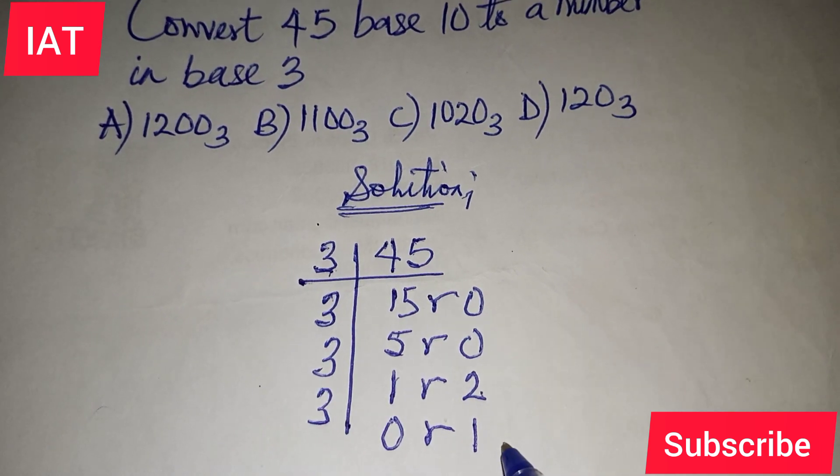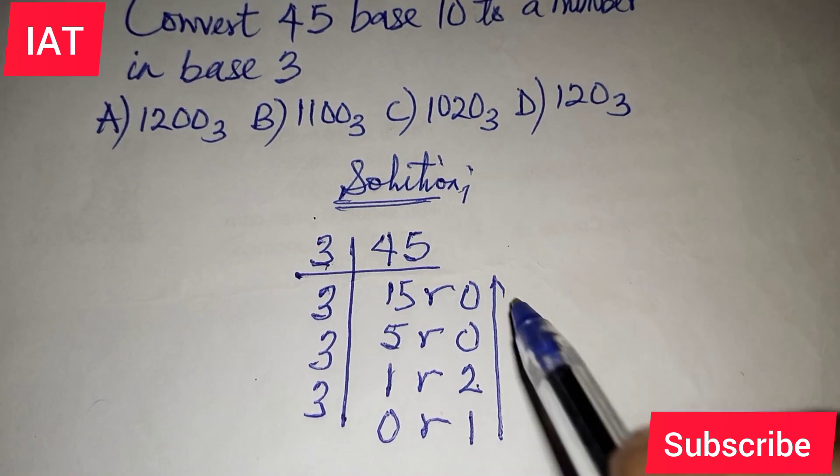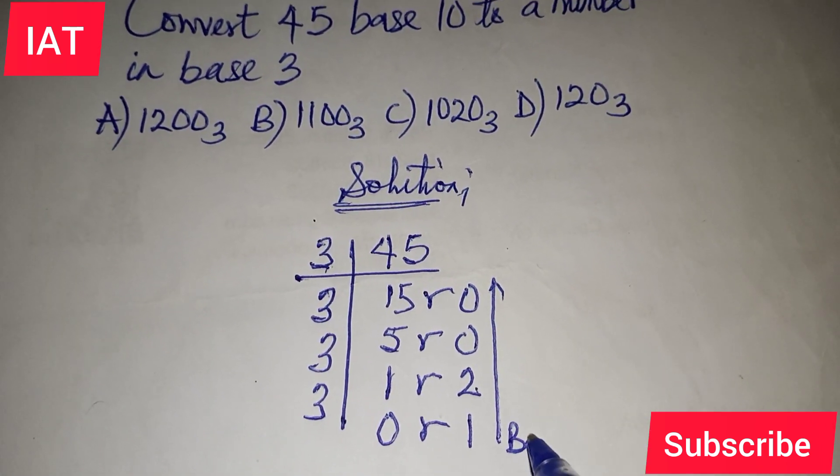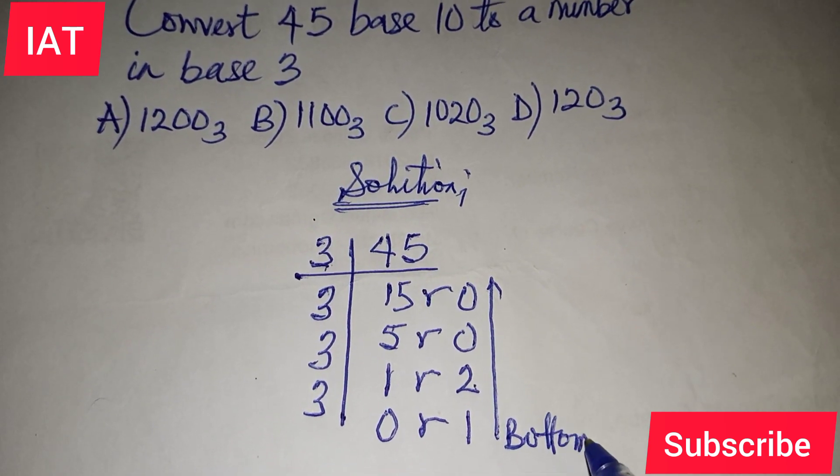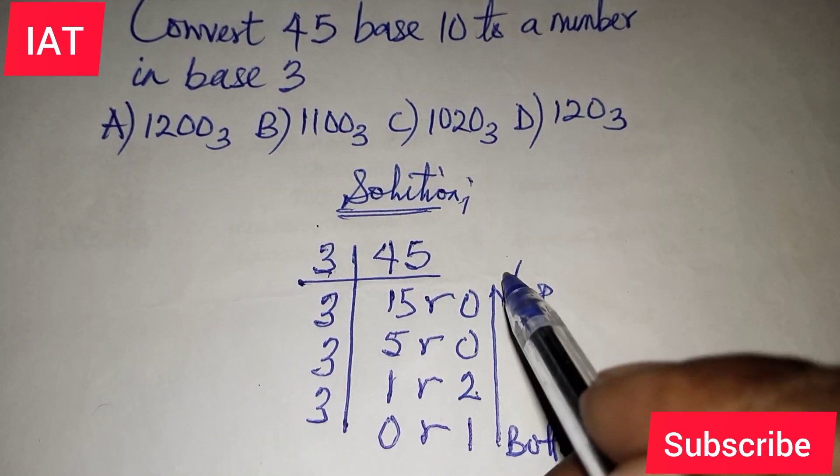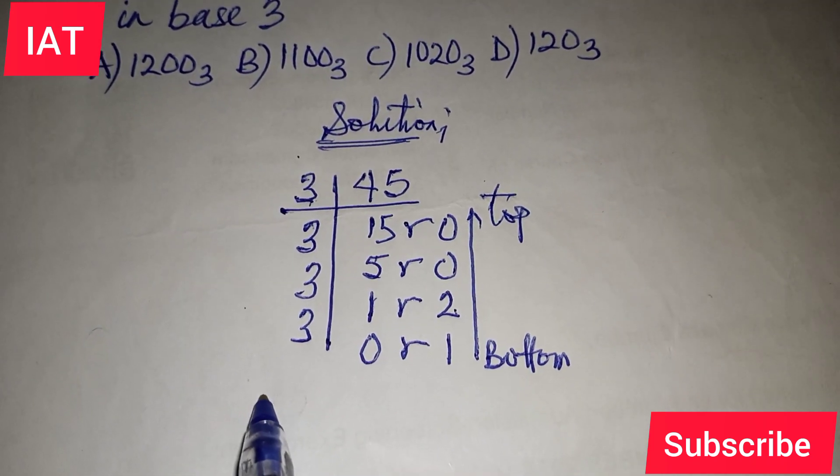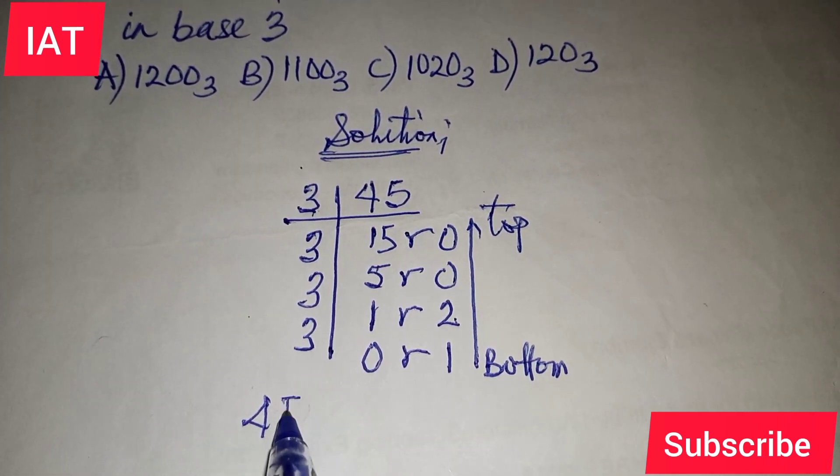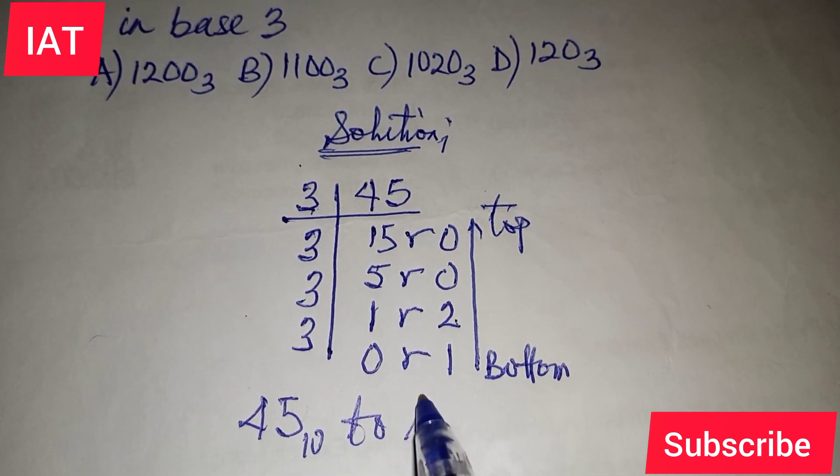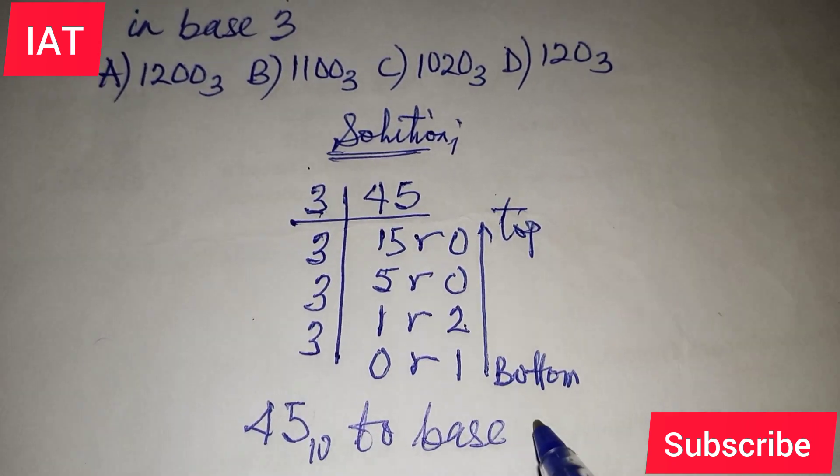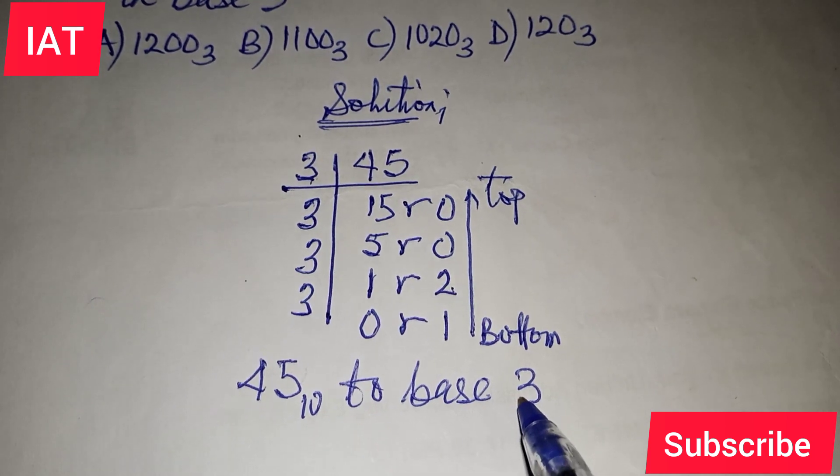So we usually follow it up from the bottom to the top. So here is the bottom. You follow from the bottom to the top. So that is to say we are picking these values from the bottom. So let's write out this 45 base 10 to base 3. That's what we are working on. We're converting 45 base 10 to base 3.